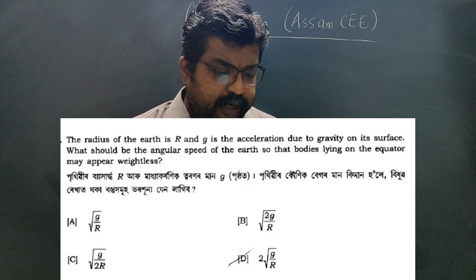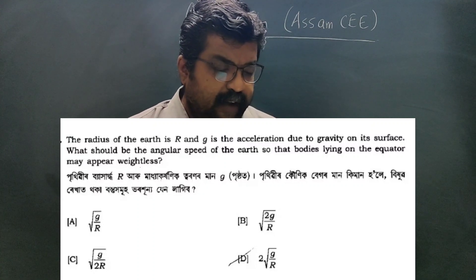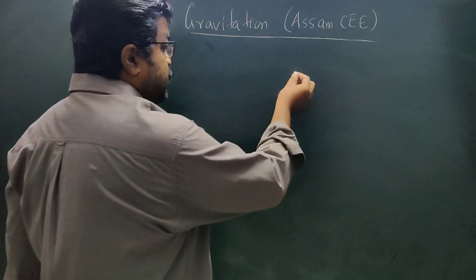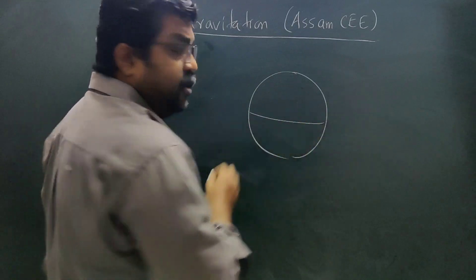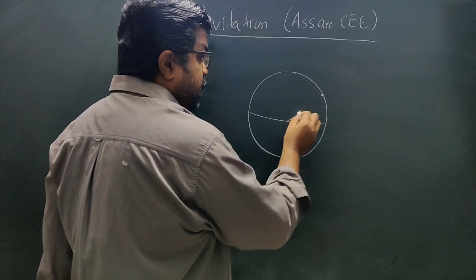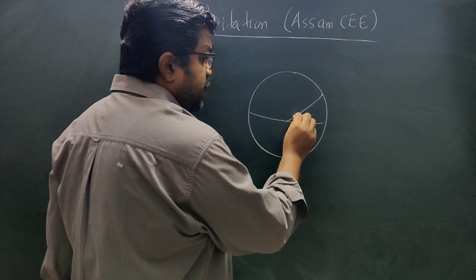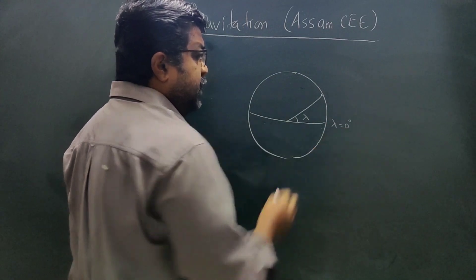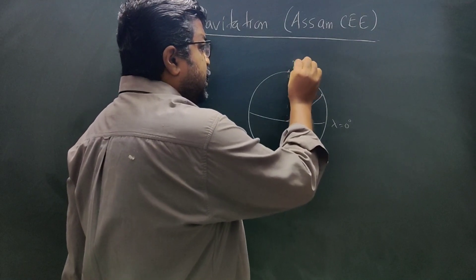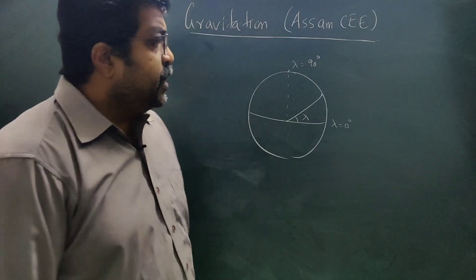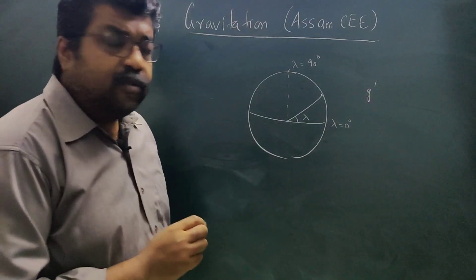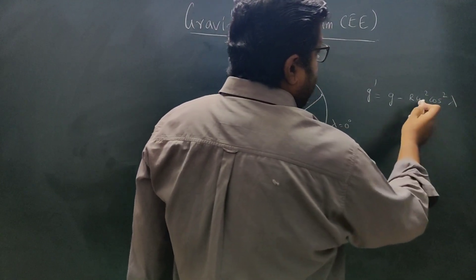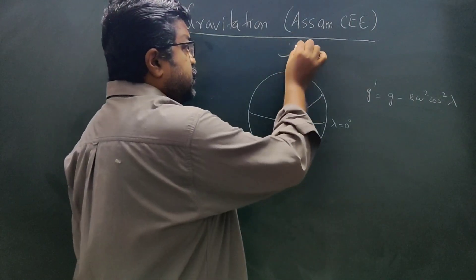The radius of the Earth is capital R and g is the acceleration due to gravity on its surface. The question asks: what should be the angular speed of the Earth so that bodies lying on the equator may appear weightless? The acceleration due to gravity varies with latitude by the relation: g' equals g minus R omega squared cos squared lambda, where omega is the angular speed of rotation of the Earth.